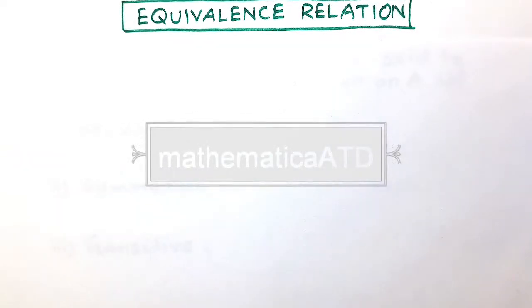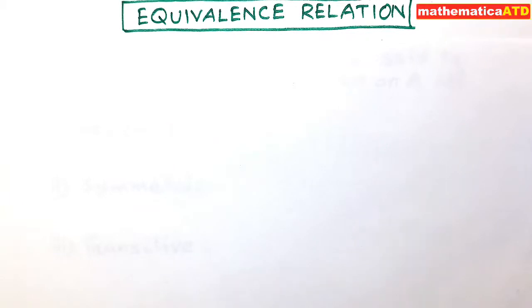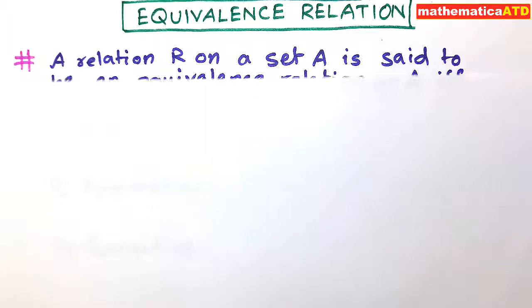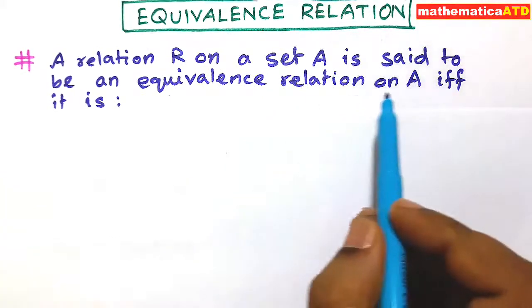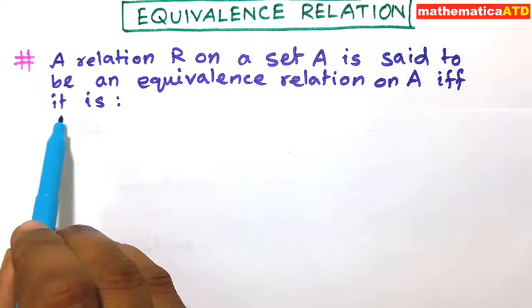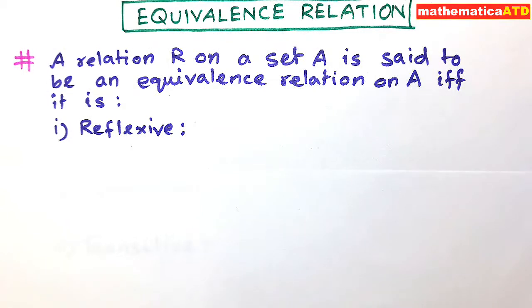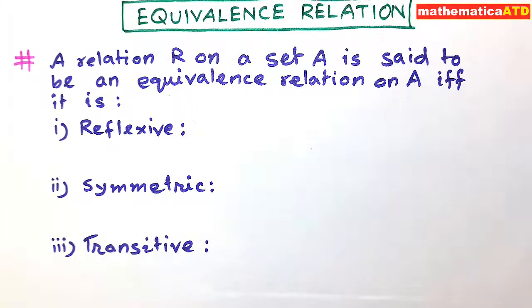Today's topic is equivalence relation. Please follow the full video; if you are new here, please subscribe to the channel. A relation R on a set A is said to be an equivalence relation on A if and only if it is reflexive, symmetric, and transitive.